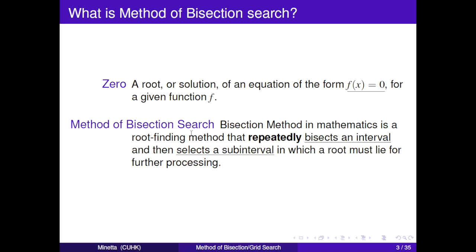Then comes the concept of method of bisection search. The bisection method in mathematics is a root-finding method that repeatedly bisects an interval and then selects a sub-interval in which a root must lie for further processing.